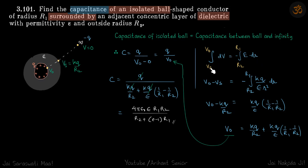Potential from surface to the inner conductor is equal to minus E dot dr, and limits will be from R2 to R1. We are going from surface to inside.